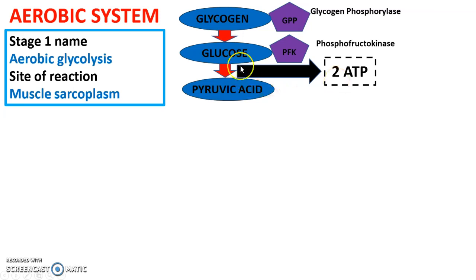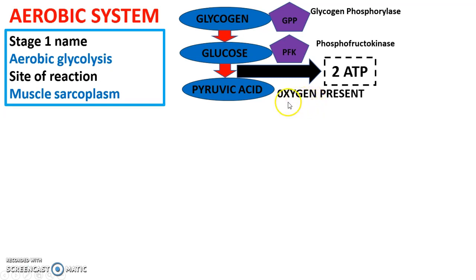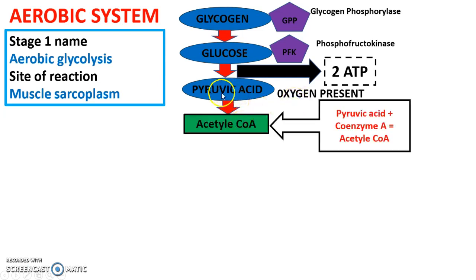The big difference between the glycolytic and the aerobic energy system is that pyruvic acid now does not convert into lactic acid, because oxygen is present. In the glycolytic system, LDH broke pyruvic acid down into lactic acid, which caused problems. But because this is the aerobic energy system — lower intensity exercise — oxygen is present, and pyruvic acid carries on. It combines with coenzyme A to form acetyl coenzyme A, shortened to acetyl-CoA.